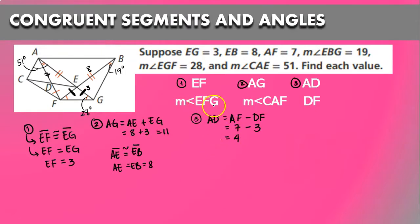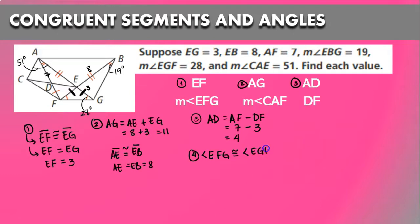What about angle EFG? Angle EFG has the same arc mark as angle EGF, meaning they are congruent. So the measurement of angle EFG equals the measurement of angle EGF, and since angle EBG is 28 degrees, angle EFG is also 28 degrees.